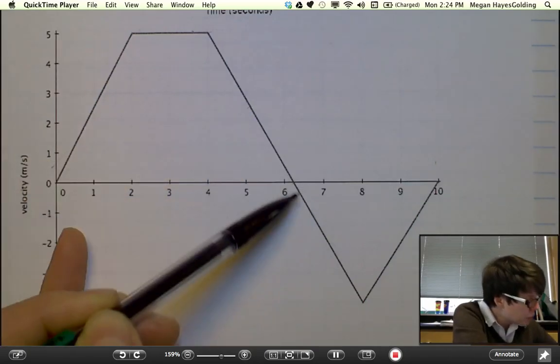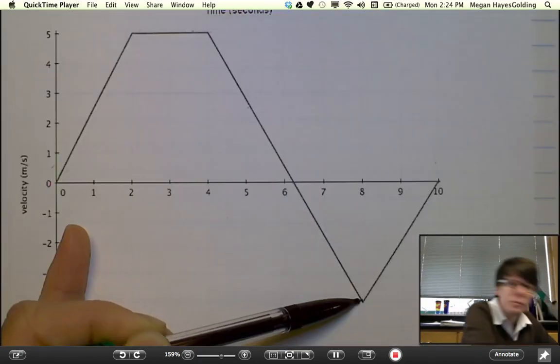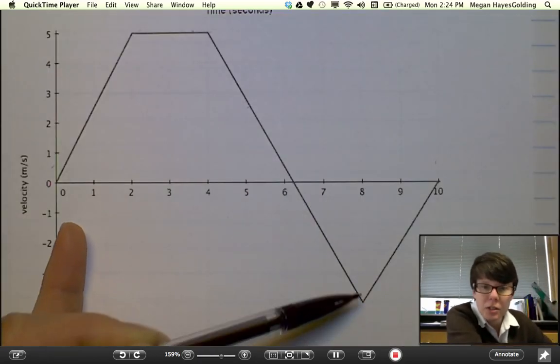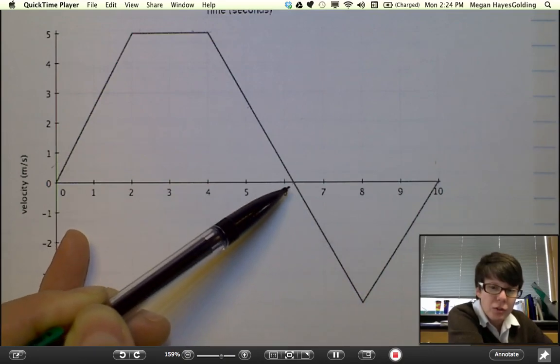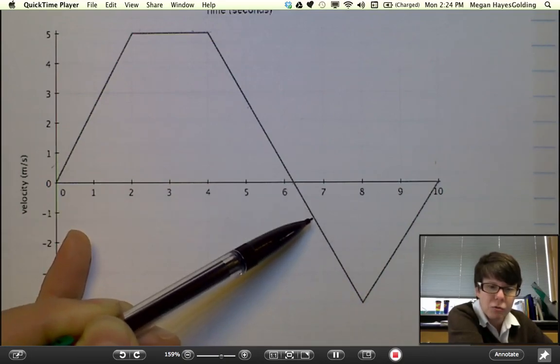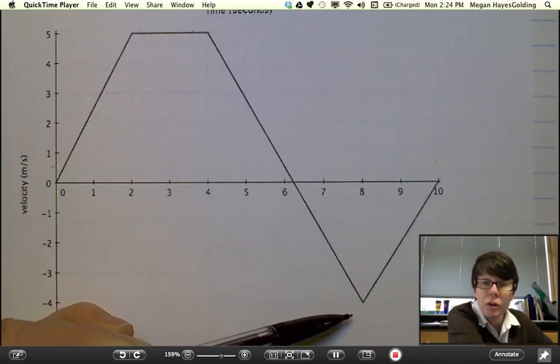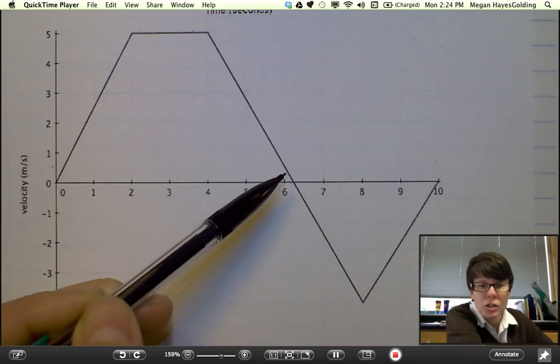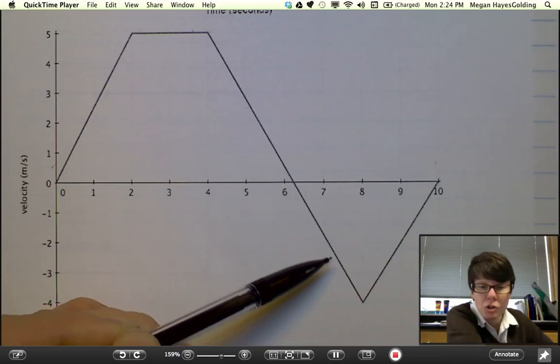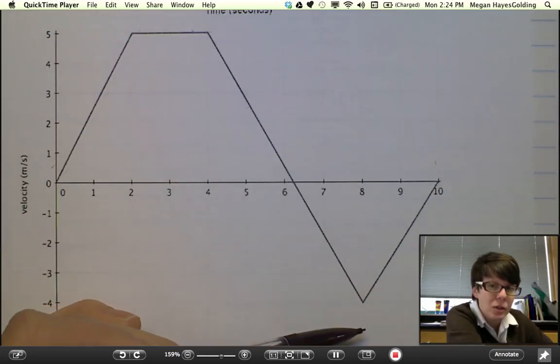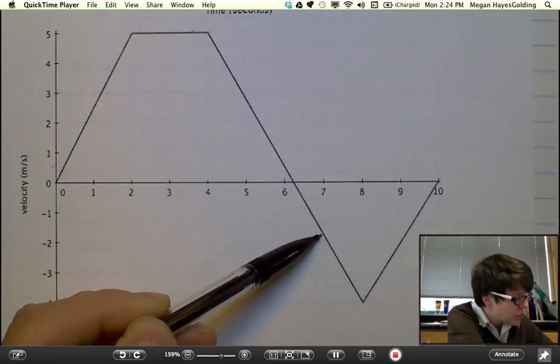How about from a little after 6 minutes to 8 minutes? What's happening to his velocity? Well, notice here his velocity is 0, then negative 1, then negative 2, then negative 3, and negative 4. That is absolutely an acceleration. His velocity is getting larger over time. It just happens to be going in the negative direction. This is an acceleration.